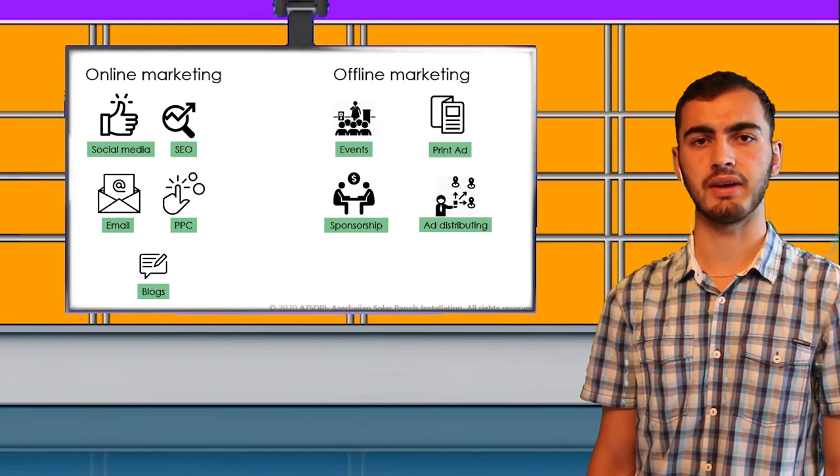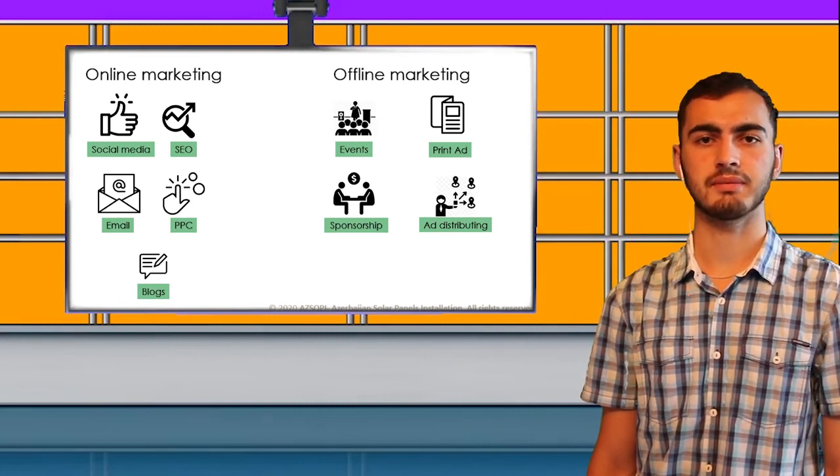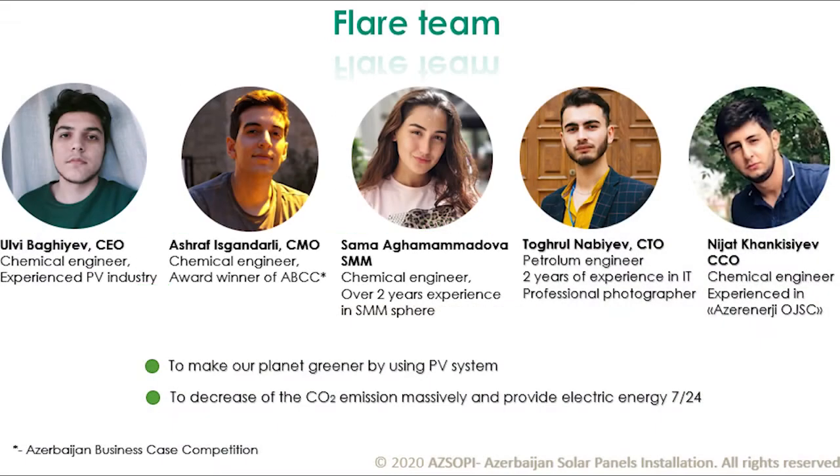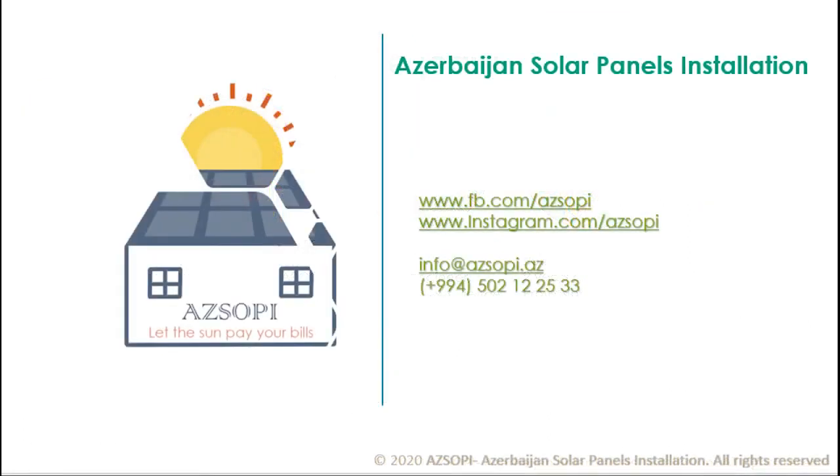As every group, we also have goals for this project: to make our planet greener by using PV systems and decrease CO2 emissions massively, and provide electric energy 24 hours and 7 days. If you require any further information, feel free to contact us.